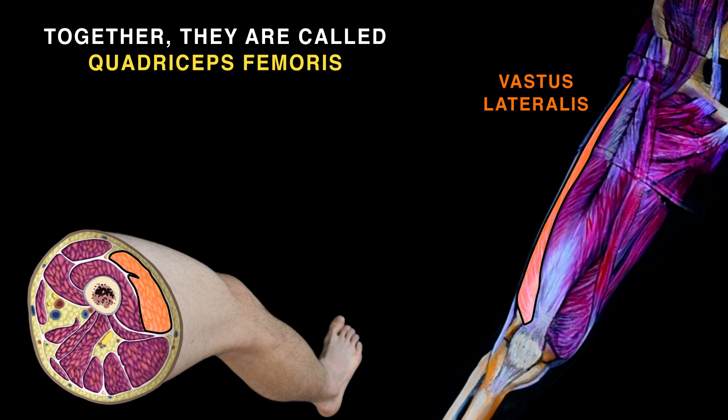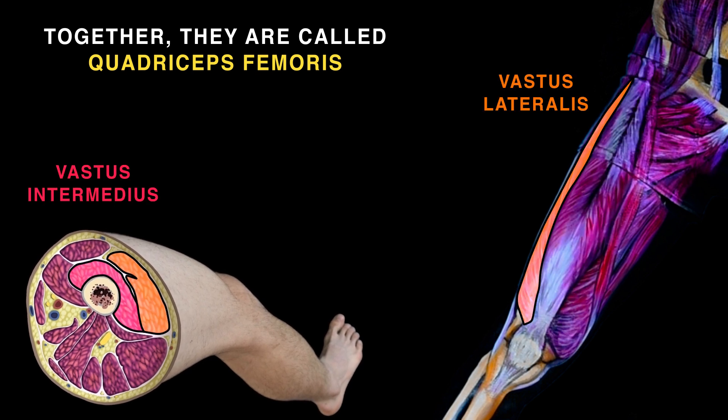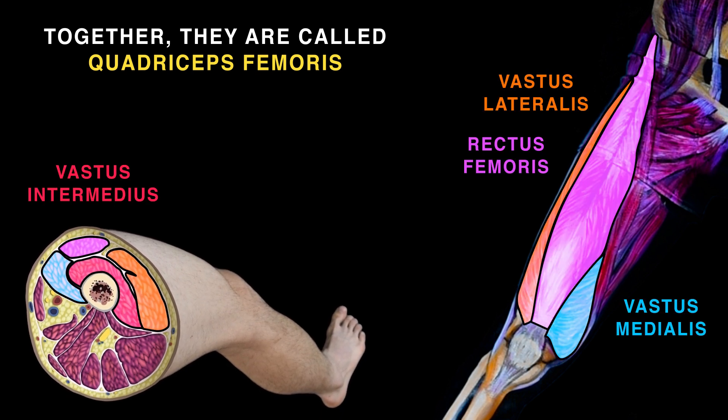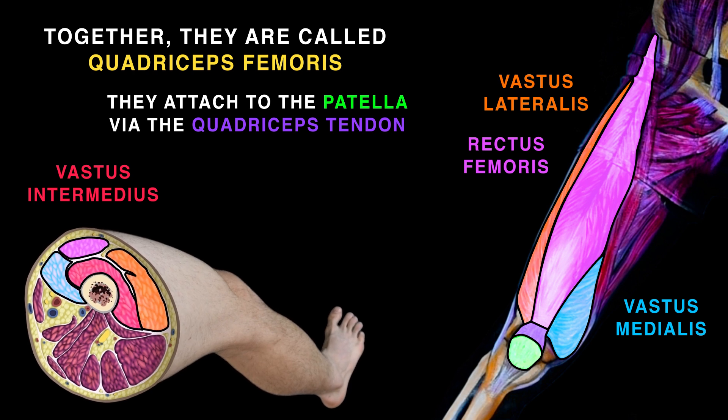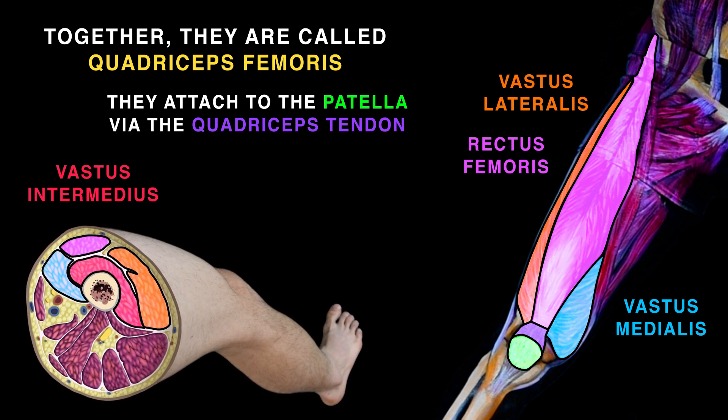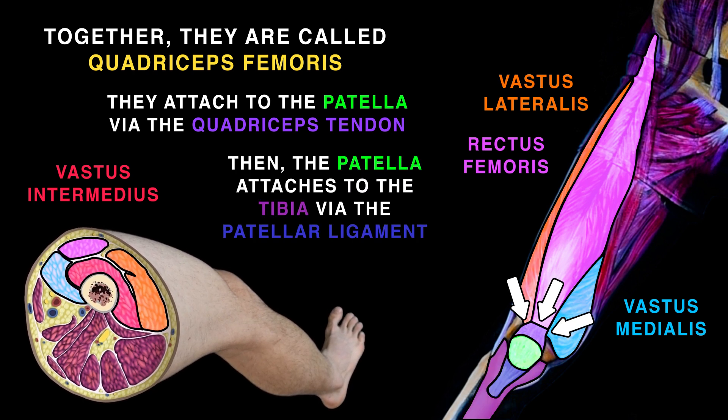These four muscles form the thigh's bulk as quadriceps femoris: vastus lateralis, intermedius, medialis, and rectus femoris. They unite and attach to the patella via the quadriceps tendon.